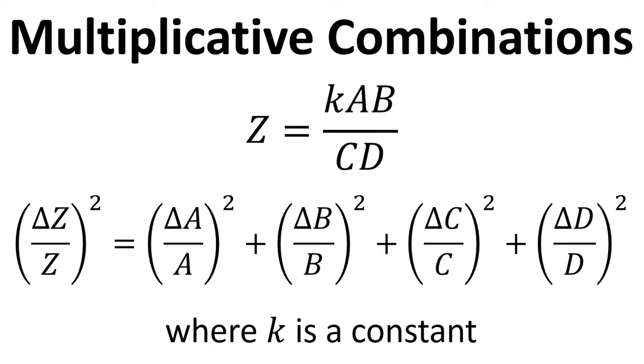Now the general form for this, if we have Z equals a combination of different variables, and whether we're multiplying them or dividing them, we still have this uncertainty equation here for the propagation of uncertainty. So in this case, we've got K, which is just a constant, it's just a fixed number,